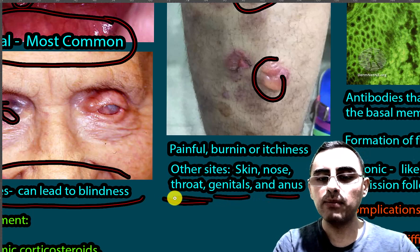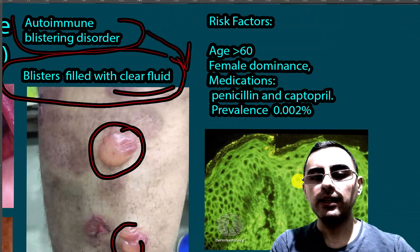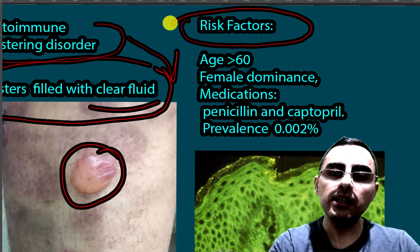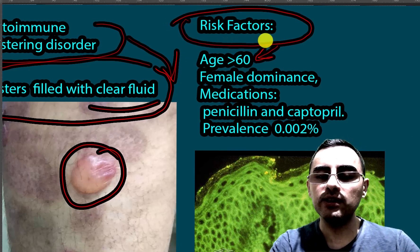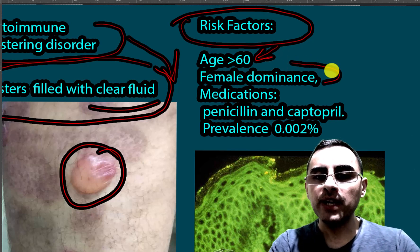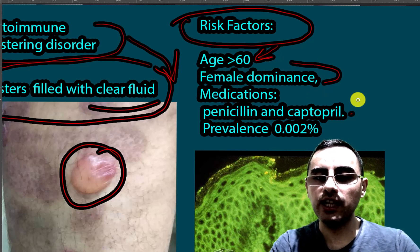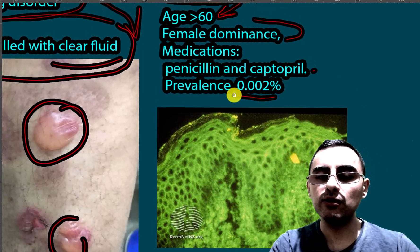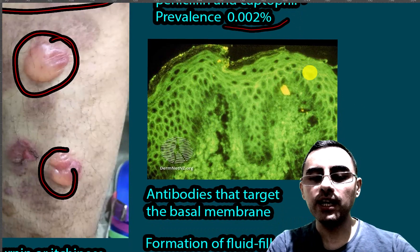Manifestations involving the genitals and anus are less common. Now let's look at the risk factors of mucous membrane pemphigoid. Age increases risk because most cases are diagnosed after 60. There is a slightly female dominance. Medications like penicillin and captopril have some associations. The prevalence of the disease is 0.002%, meaning this disease is not common.